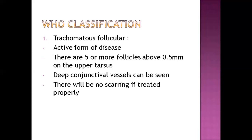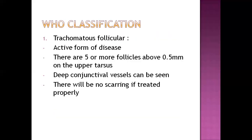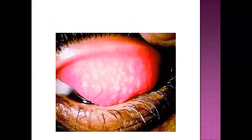According to WHO classification, trachoma is categorized as: trachomatous follicular (TF), trachomatous intense (TI), trachomatous scarring (TS), trachomatous trichiasis (TT), and corneal opacity (CO). Trachomatous follicular is the active form of disease. There are five or more follicles above 0.5 millimeter on the upper tarsus, and deep conjunctival vessels can be seen. If treated at this early phase, there will be no scarring.